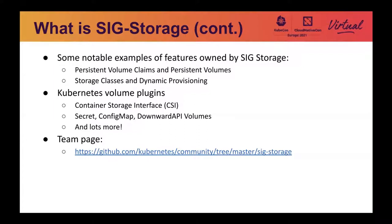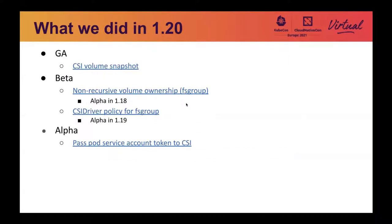So that's a brief introduction of SIG Storage. Next, I will talk about what we did in the 1.20 release. In 1.20, the CSI snapshot feature moved to GA. A snapshot represents a point-in-time copy of a volume. It can be used as a data source to create a new volume. This feature provides a basic building block for supporting data protection in Kubernetes.